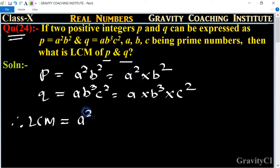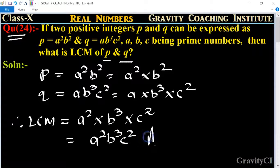So the highest power of a is a square, and b is b q, and c is c square. So it is equal to a square b q c square, which is the required answer.